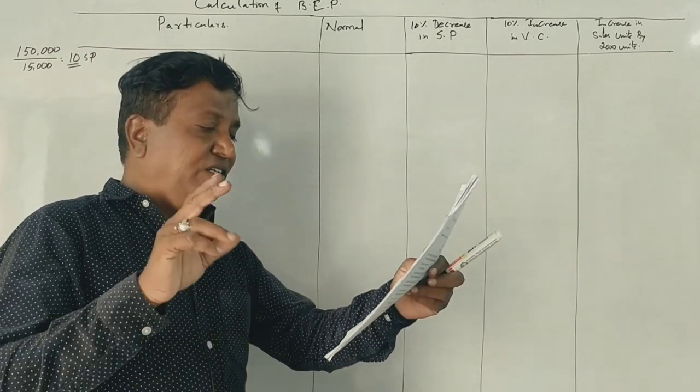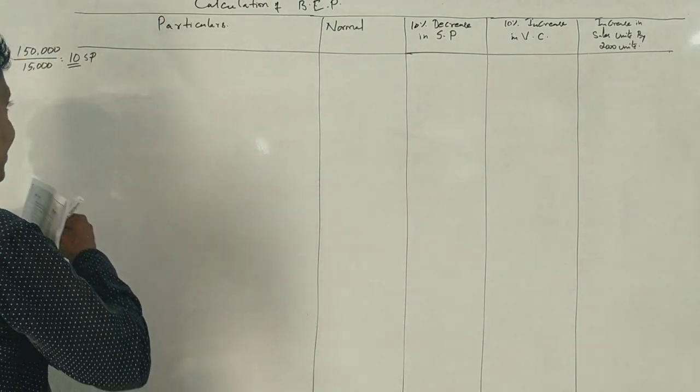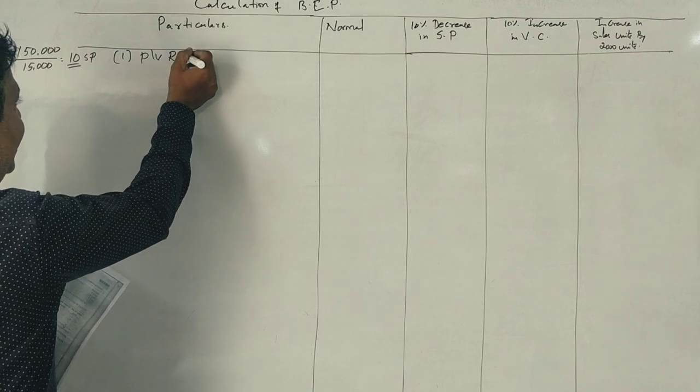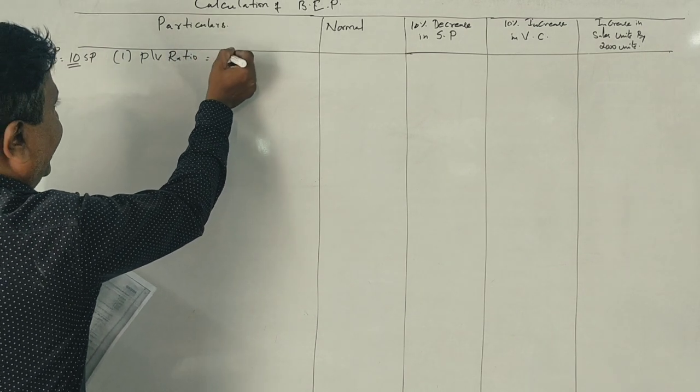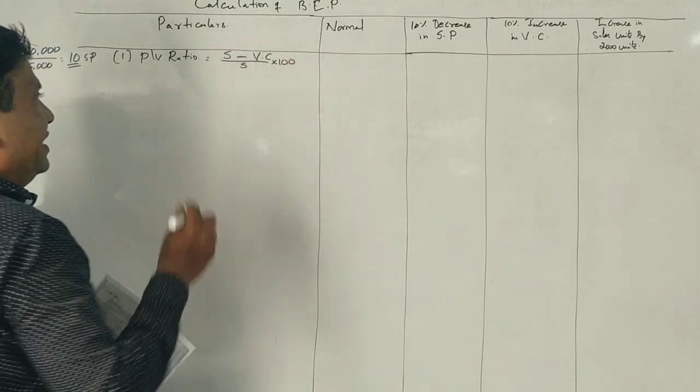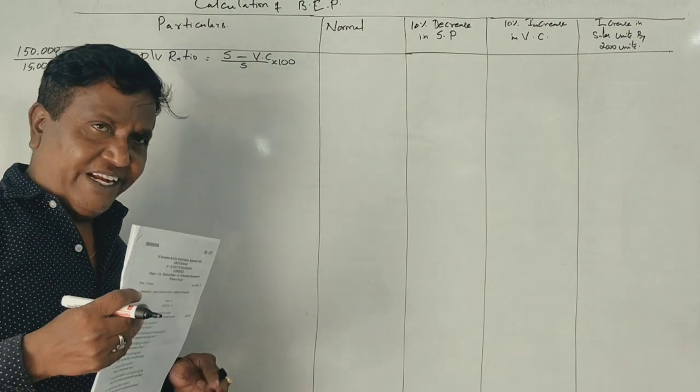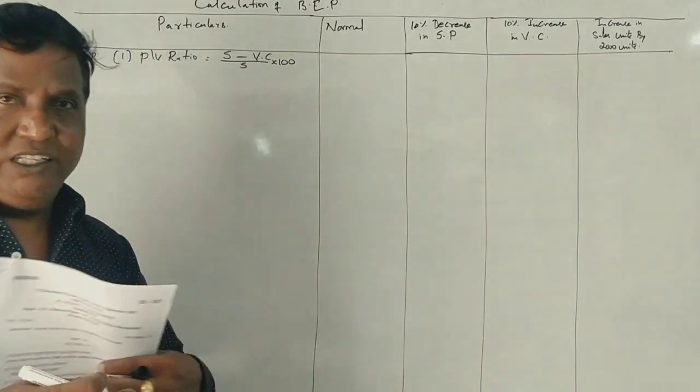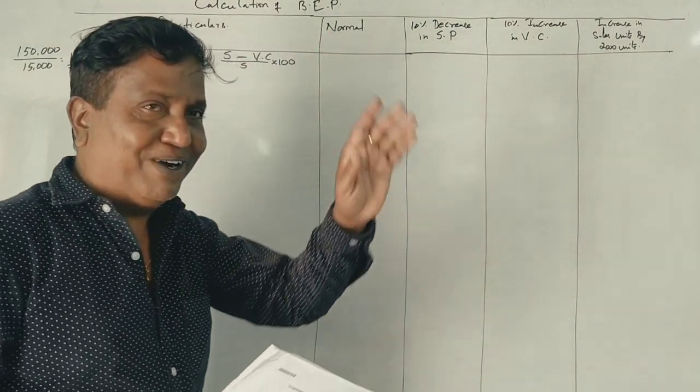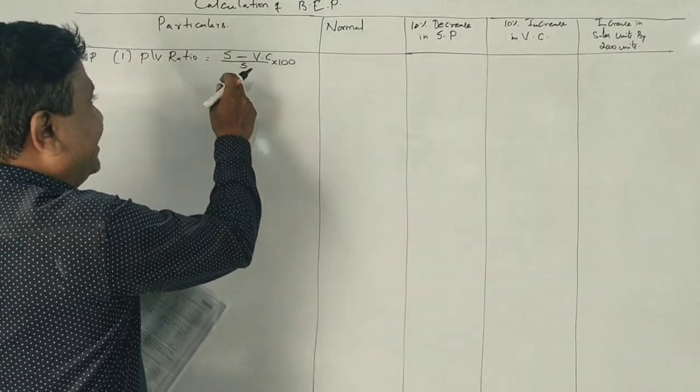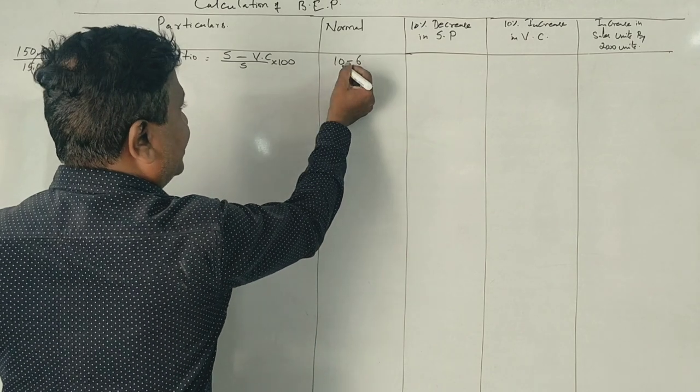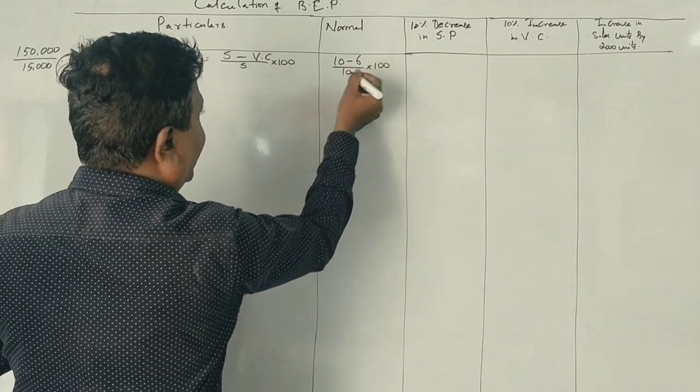First, three questions are answered. PV ratio: sales minus variable cost divided by sales into 100. In the normal case, if you look at the question, three columns are divided. Selling price is Rs. 10, variable cost is Rs. 6, into 100.